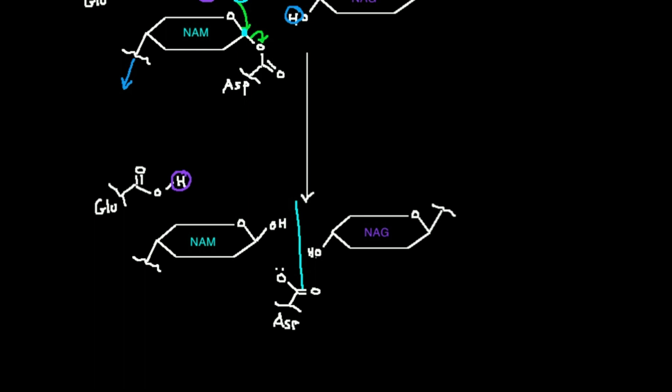Now, keep in mind, if we do this, right here, if I labeled this, this would be a NAM, right? And then there would be a NAG associated with that. And then potentially, there'd be a NAM here, and then another NAG, and so on and so forth. Which of these bonds are going to get split by lysozyme? And this is a really important consideration.